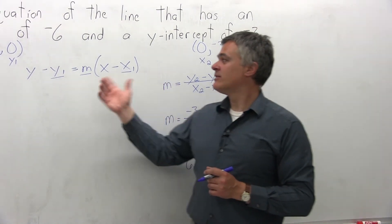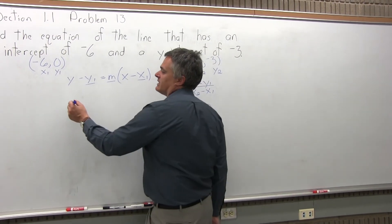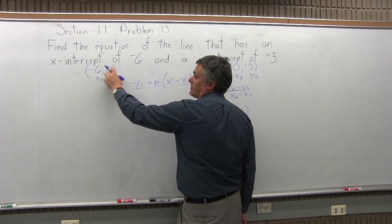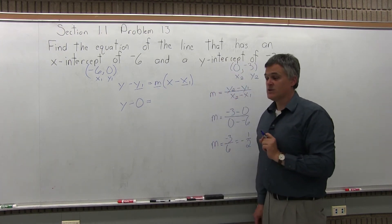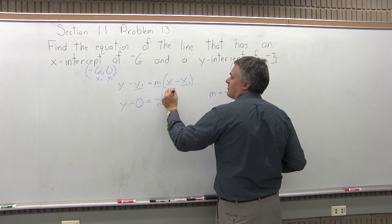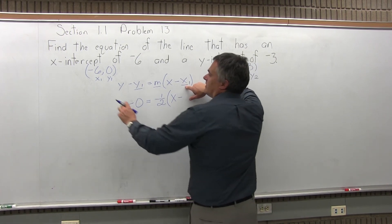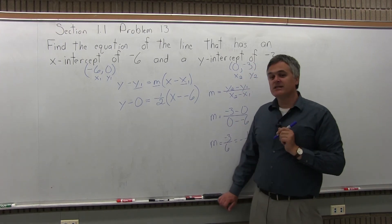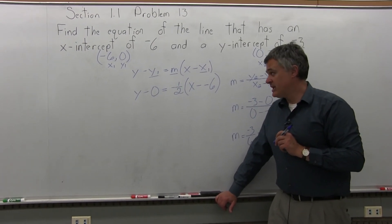Now that I've found the slope, I go back to the formula y minus y1 equals m times x minus x1 and put the values in. y stays as y, then minus y1 — the value of y1 is 0. Then equals, and m is negative 1 half — don't forget the negative. Then x minus x1, where x1 is negative 6, and I close the parentheses. That is the equation of the line, but it's not fully simplified yet.